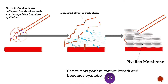Hence, the patient cannot breathe and becomes cyanotic. You would have come across similar terms such as HMD, ARDS, or RDS, which ultimately lead to respiratory failure. All of these may have different etiology but similar pathogenesis.